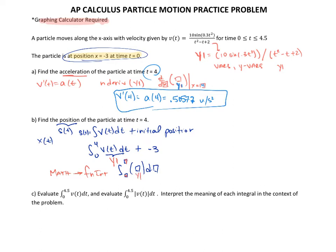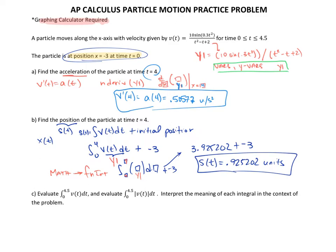Obviously you're going to put in here 0 to 4, y1. The way we access y1 is vars, yVARS, and then choose the y1 option. When you do that and add the negative 3, I will get a value for the integral that comes out to be 3.925202 plus the negative 3. So that means s(t) comes out to be 0.925202 units.